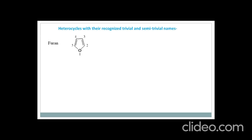Here are some examples of drugs which have the furan ring in their structure: furosemide, which is used as a diuretic; nitrofurantoin, which is an antibiotic; prazosin, which is an anti-hypertensive drug; and ranitidine, which is an anti-histamine used in peptic ulcer.